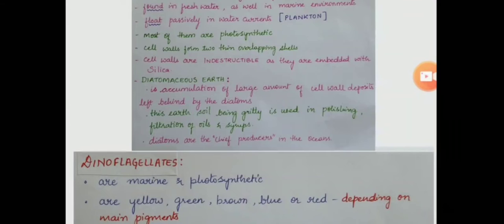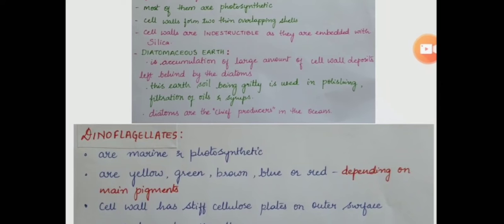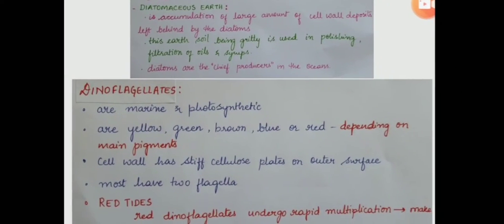Diatomaceous earth is nothing but the accumulation of large amounts of cell wall deposits which are left behind by diatoms. This earth soil, being gritty, is used in polishing, filtration of oils and syrups. This is one application of diatomaceous earth. Diatoms are called the chief producers of the oceans.